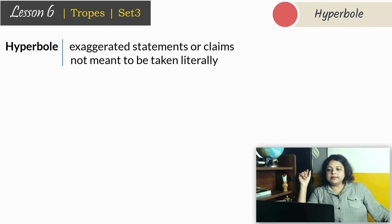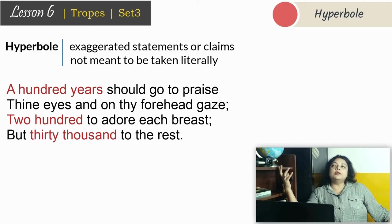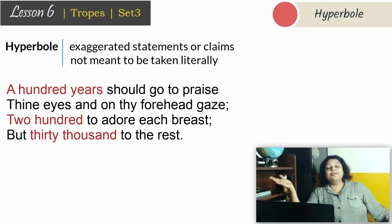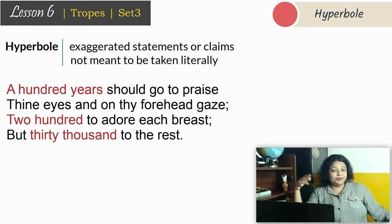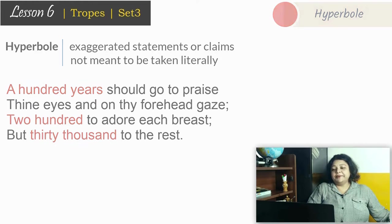Here is an example from 'To His Coy Mistress' by Andrew Marvell: 'A hundred years should go to praise thine eyes and on thy forehead gaze, two hundred to adore each breast, but thirty thousand to the rest.' He is talking about thousands and thousands of years which he would spend admiring each body part of his beloved if he had so much time to spare. This is hyperbole because he's talking about thousands of years, and at the same time it is an impossibility because he doesn't have so much time.